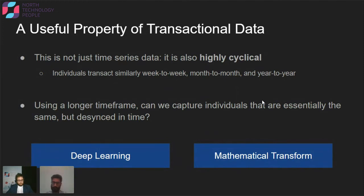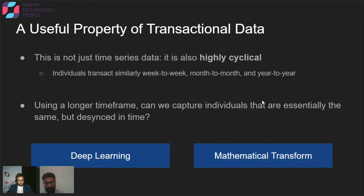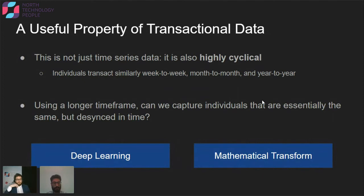When you do time series forecasting, the critical benefit you get from time series data is that you can look at consecutive data points in conjunction with each other. If you think about an LSTM passing in one data point after the other, what that lets you do is — if there are similarities between two individuals at a time point that is close but not the same — you still capture the fact that those people are similar.